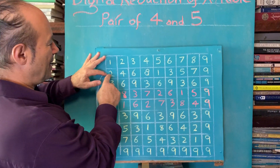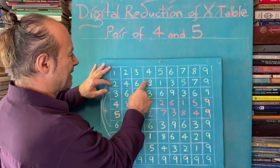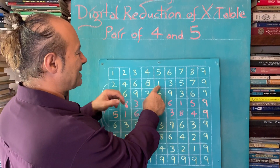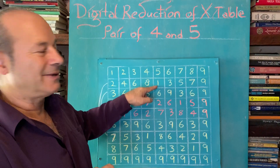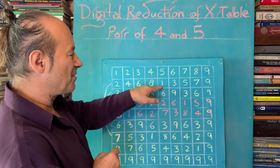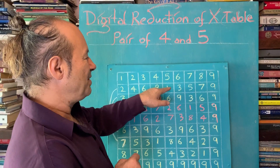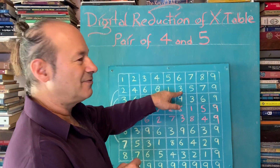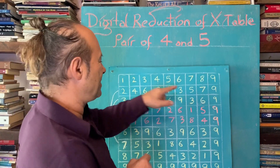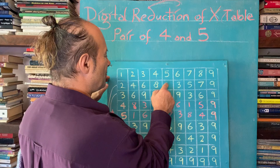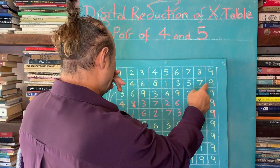When we get to ten in the two times table, we take away nine, so you're left with a remainder of one. When we get to twelve, take away nine, you're left with a remainder of three. So the two times table gives you: two, four, six, eight, one, three, five, seven, nine.